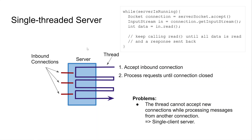Basically, we have a server represented by a server socket. While the server is running, a thread is executing the server code and calling server socket dot accept. This accept method blocks until an inbound connection arrives. Once a client connects, accept returns and you get a socket representing that connection. From the connection you can get an input stream and read data sent from the client. This read call is also blocking until there is actually data to read from the input stream.